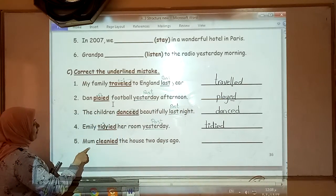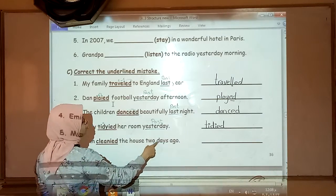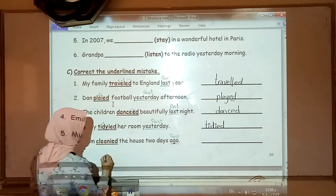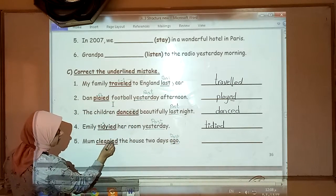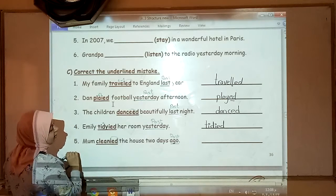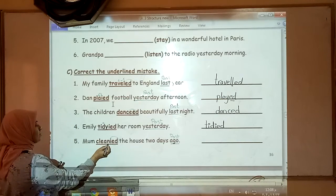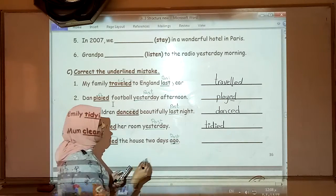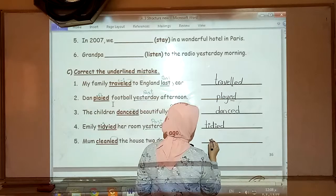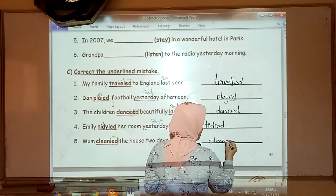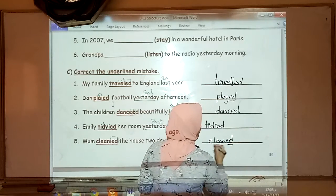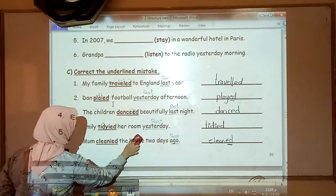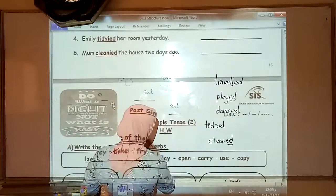Number five. Mum cleaned the house two days ago. Ago, past. Cleaned. They added IED which is wrong because the verb clean doesn't end in Y. So we must have ED only. So it will be cleaned with ED at the end. Okay? Good. Let's go to the past form of the verb.